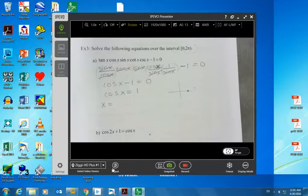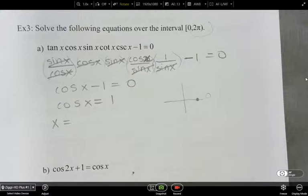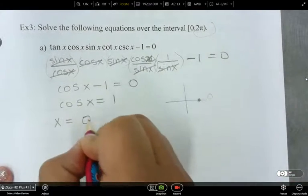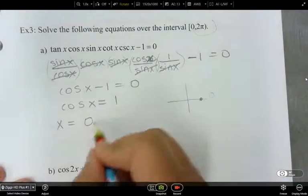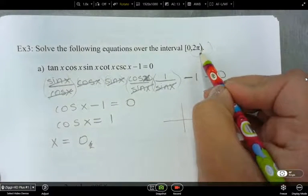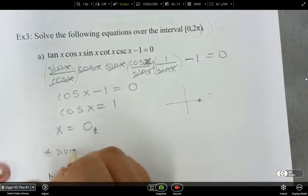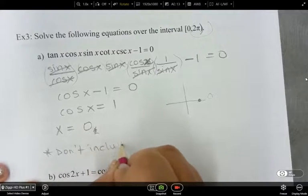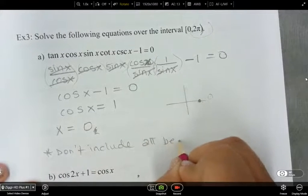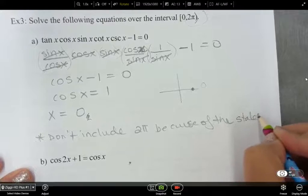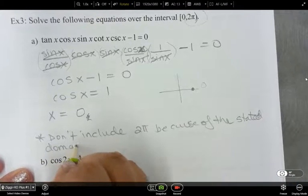Now let's finish this question up. We've got, what did we decide was our answer here? So 0. Because we can't include 2 pi. So x equals 0, and that's it. The domain states that 2 pi is not included because it's got a round bracket, so we can't include 2 pi. So don't include 2 pi because of the stated domain above.